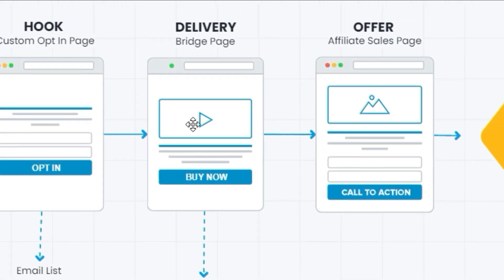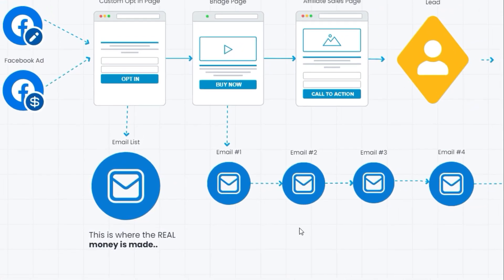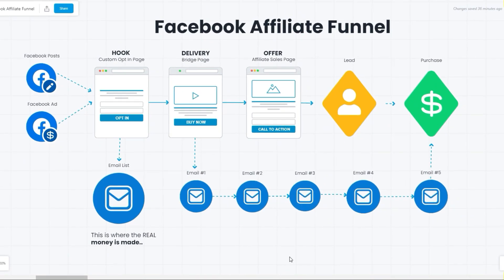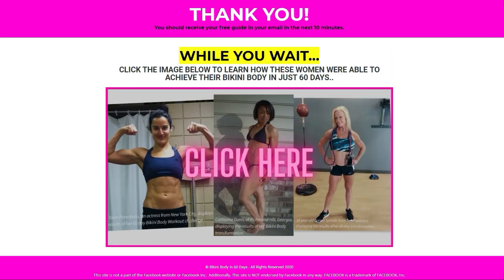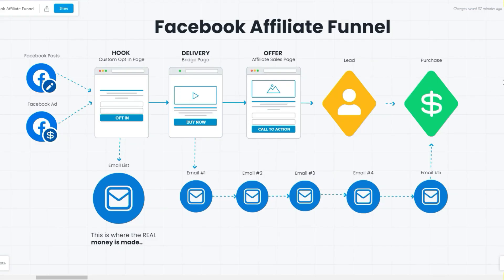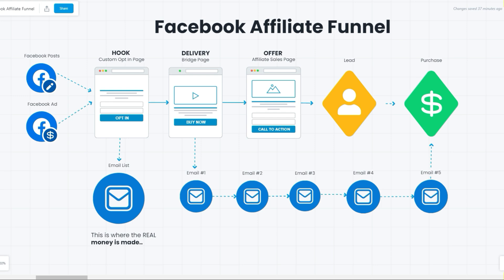This might look complicated — creating a hook offer, delivering a bridge page, and linking that to an affiliate sales page along with building your email list and doing a follow-up sequence. But it's not actually complicated if you have the right tools in place. In the following lessons you'll learn exactly how to create your own Facebook affiliate funnel. We're actually going to reverse engineer one of my own affiliate funnels. This is my hook offer — a custom opt-in page for a real live Facebook affiliate campaign I'm running right now. I'm going to show you how I created the hook offer, how to set up the entire page, how to capture emails, how to set up your bridge page, and how to set up the follow-up sequence.